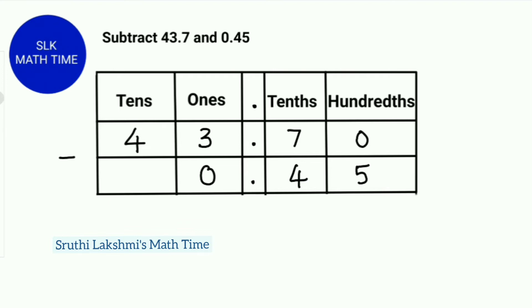Remember that we cannot subtract 5 from 0, so we borrow 1 from the tenths digit. So the tenths digit becomes 6 and the hundredths digit becomes 10. So 10 minus 5 is 5, 6 minus 4 is 2. Then we put the decimal point down in the answer line.